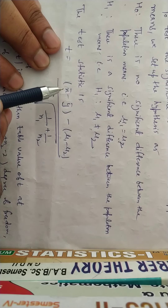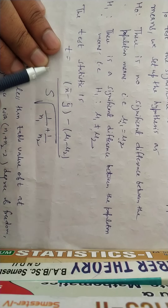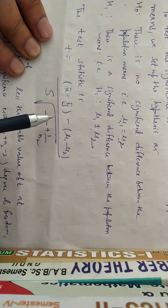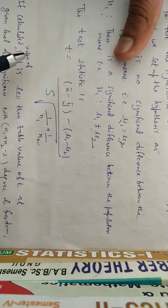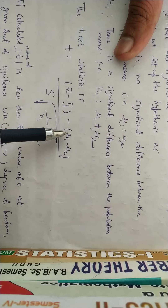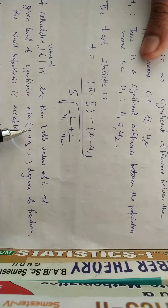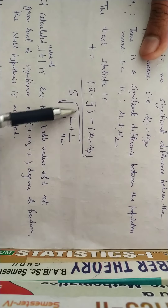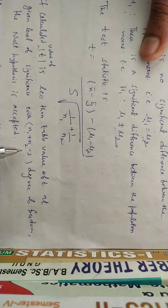When dealing with this type of problem, we apply the T-test using the T-statistic formula. After calculating the value, we take the absolute (positive) value. If the calculated value is less than the table value at the given level of significance with N1 + N2 − 2 degrees of freedom, the null hypothesis is accepted — meaning there is no difference between the population means.